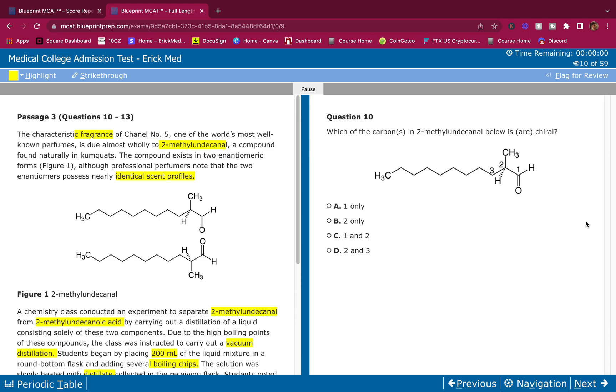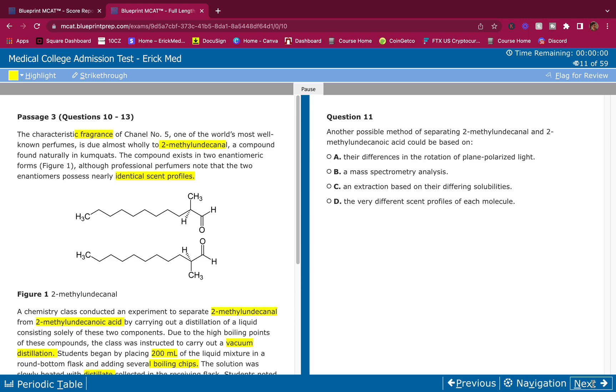Which of the carbons in 2-methylundecanel is chiral? A chiral molecule is something bonded to four different substituents. Let's look at carbon 1 - it's bonded to three things, therefore it's achiral. Let's look at carbon 2 - it's bonded to four different things, therefore it is chiral. Carbon 3 is bonded to two hydrogens which are the same, therefore it's achiral. The only one that is chiral is 2. It's that easy.